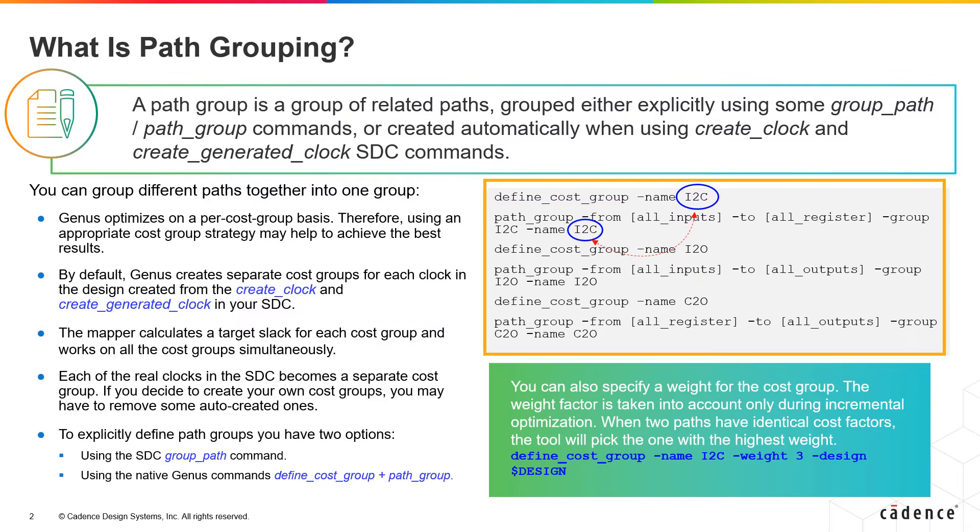We are showing here a typical example where we are defining the cost group and path group accordingly. We are naming the cost group and the same group is associated with the path group when you define that. And when the timing results are displayed, you can also see to which path group the path belongs in the report.